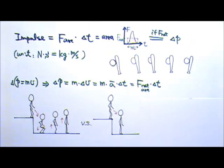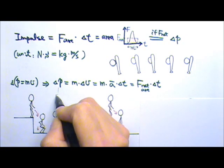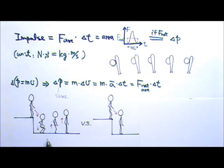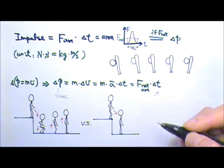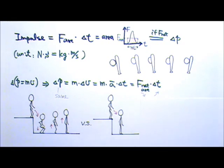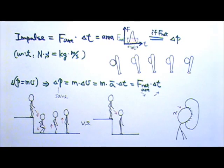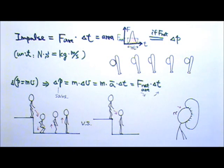The impulse equation can also explain why, if we jump off a table, we bend our knees to land safely. When we land, there is a certain amount of downward momentum to remove to come to rest. While delta P is the same, bending our knees allows more time to come to a stop, therefore less force on our knees. An abrupt landing on straight knees involves much less time and a much stronger force, which can damage our joints. The same goes for airbags in an automobile collision — an inflated airbag provides longer time for a person to come to a complete stop, therefore the force on the person is lessened.